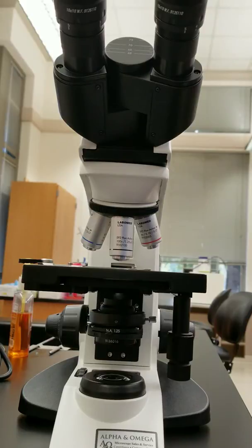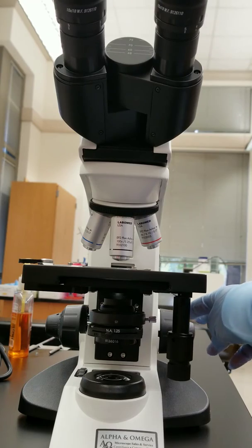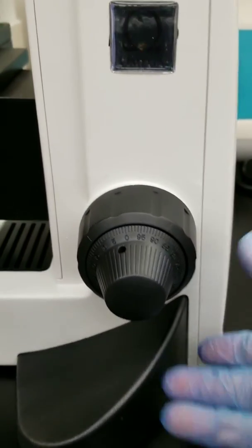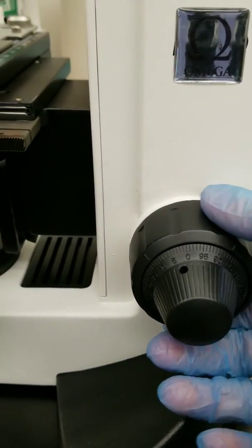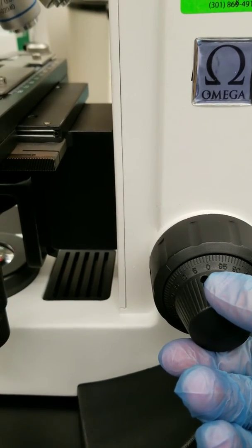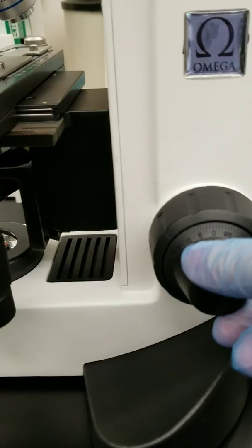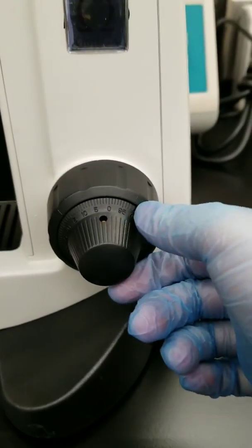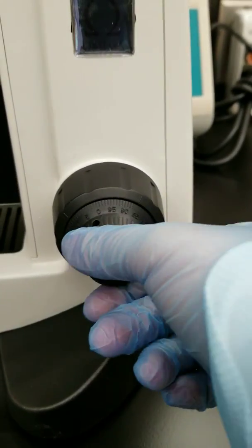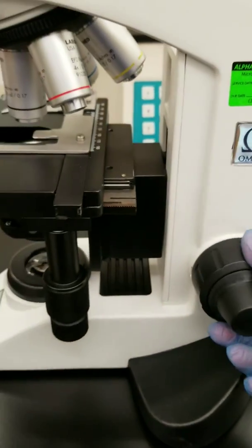The big knobs that you see behind that are the coarse and fine adjustment knobs. Let's take you around the side. The outside here is the coarse adjustment, and here is the fine adjustment. Notice it has degrees notched on there, and that'll take you in and out of focus.